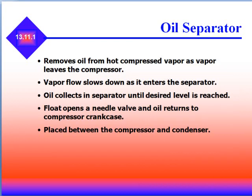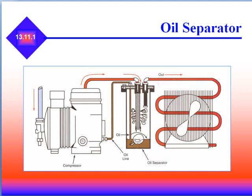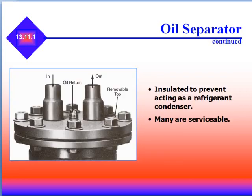The oil separator removes oil from the hot compressed vapor as vapor leaves the compressor. The vapor flow slows down as it enters the separator, and the oil collects until the desired level is reached. A float then opens a needle valve and returns the oil to the compressor crankcase. It's placed between the compressor and the condenser. Discharge gas comes in, oil pools on the bottom, discharge gas goes out to the condenser, and the oil returns to the crankcase on the low pressure side. The oil separator is insulated to prevent it acting as a condenser, and many are serviceable by removing the bolts.